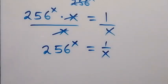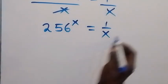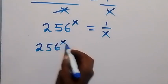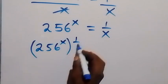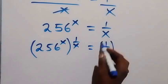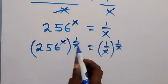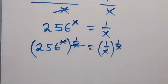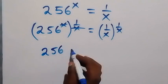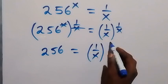In the next step, let's remove this power of x by raising both sides to the power of 1 over x. We have 256^x raised to the power of 1 over x, which equals 1 over x raised to the power of 1 over x. Since this power multiplies x, we cancel x, and we are left with 256.